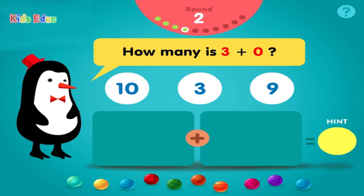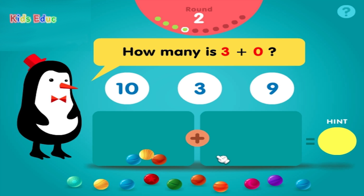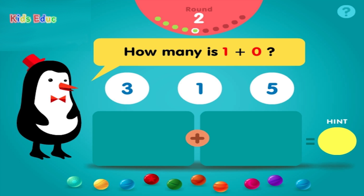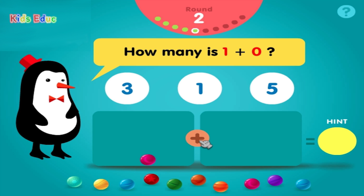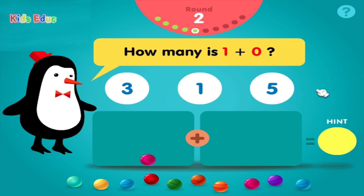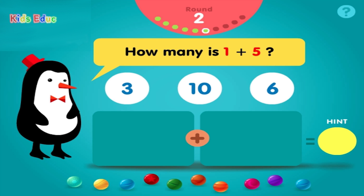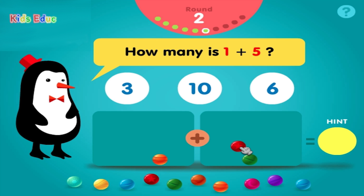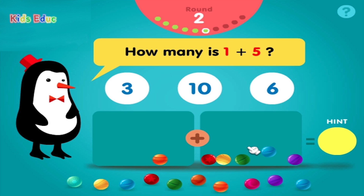How many is 3 plus 0? 1, 2, 3, equals 3. Correct!